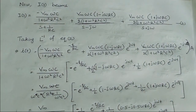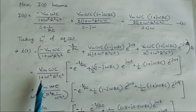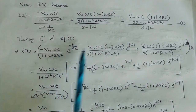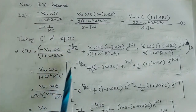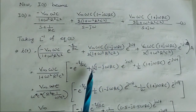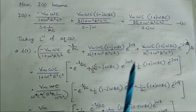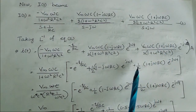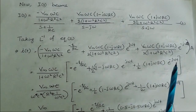To simplify further, the factor Vm·ω·C / (1 + ω²R²C²) is common to all three terms. Taking it out, the remaining parts are: −e^(−t/RC), and the terms (1/2)(1 − jωRC)·e^(jωt) and (1/2)(1 + jωRC)·e^(−jωt).